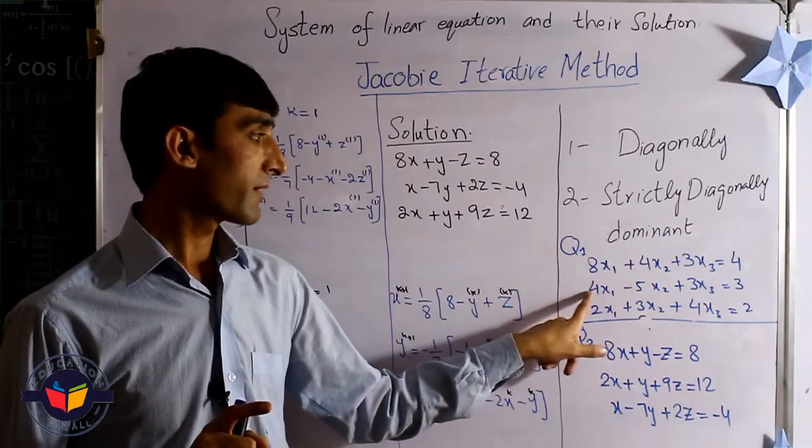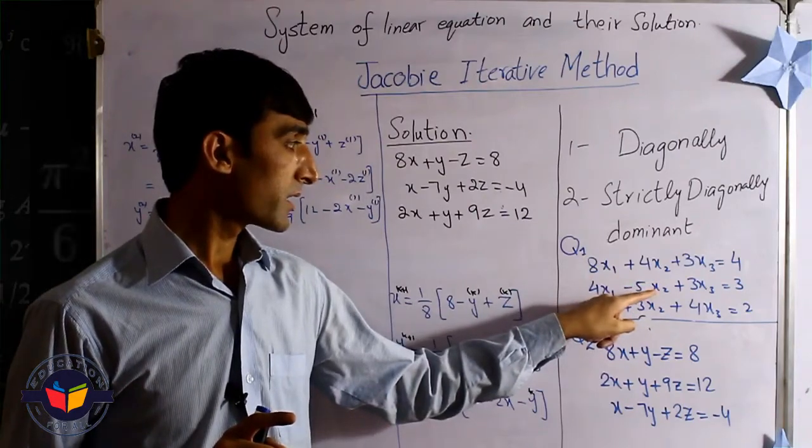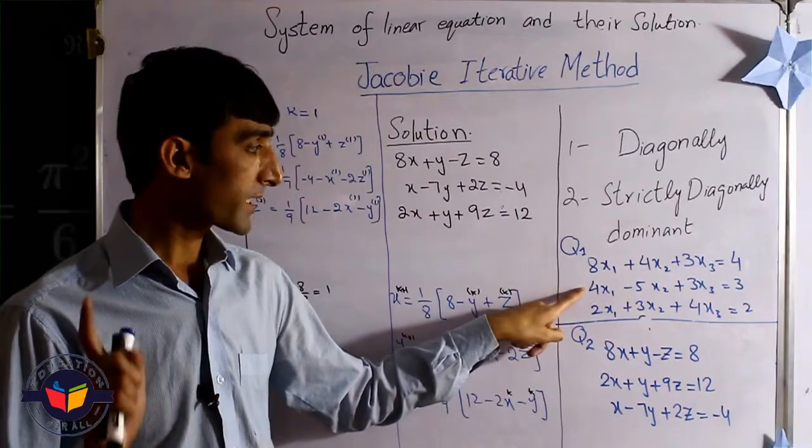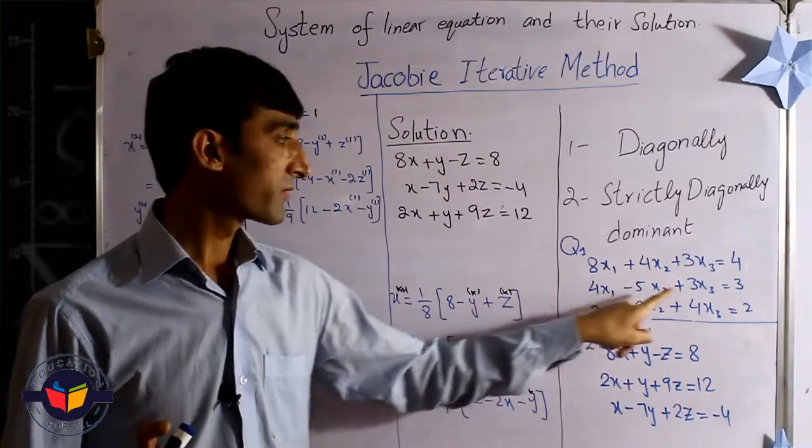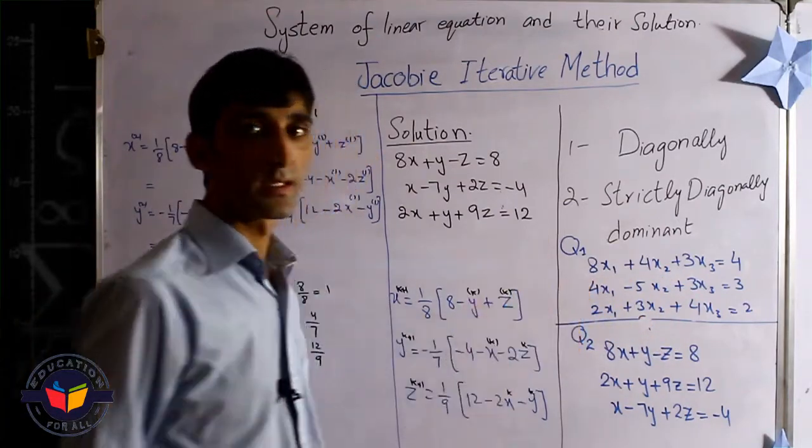That means 7 is greater than 5. We need it diagonally dominant because this is the second row. The second element should be greater than the sum of these two. So this one is not a diagonally dominant matrix.